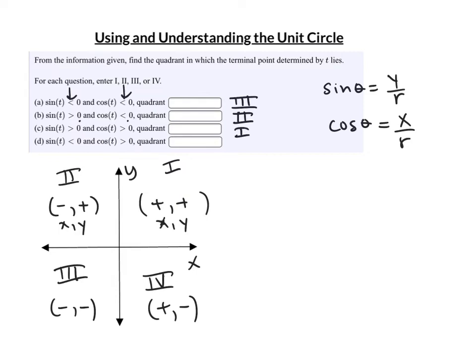For the last one, where is sine less than 0 and cosine greater than 0? Sine less than 0 means y is negative, putting us in quadrants 3 and 4. Cosine greater than 0 means x is positive. That puts us in quadrant 4. So the answer is quadrant 4.